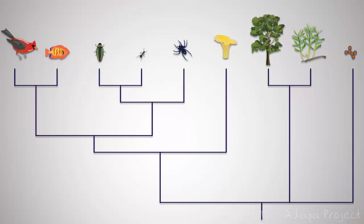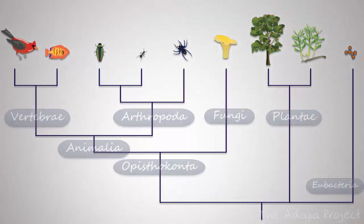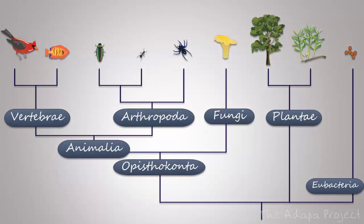Another difference between systematics and our kingdom example is that scientists can't use the name of organisms to reveal their relationships. It is rather the other way around. First, systematists reconstruct the tree and then they name the groups. Because the tree is in flux all the time, names of organisms are constantly changing as well.